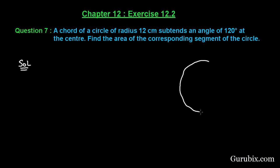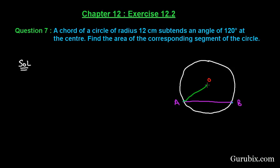First of all, we shall draw a rough sketch of the figure using the information given. This is the circle, and suppose this is the center, denoted by O. Here we have a chord AB which subtends an angle of 120 degrees at the center of the circle. We have to find the area of the corresponding segment of the circle.